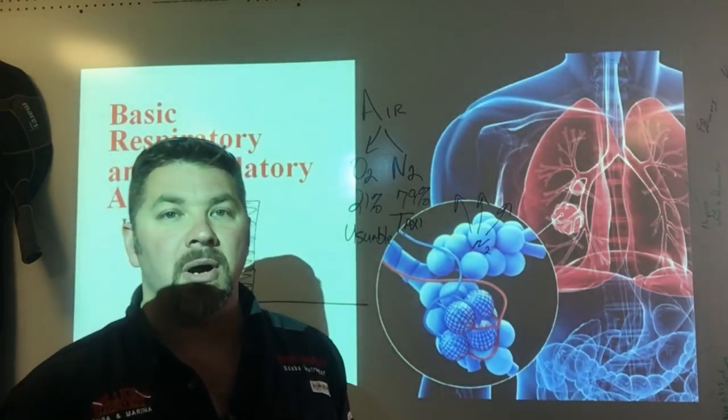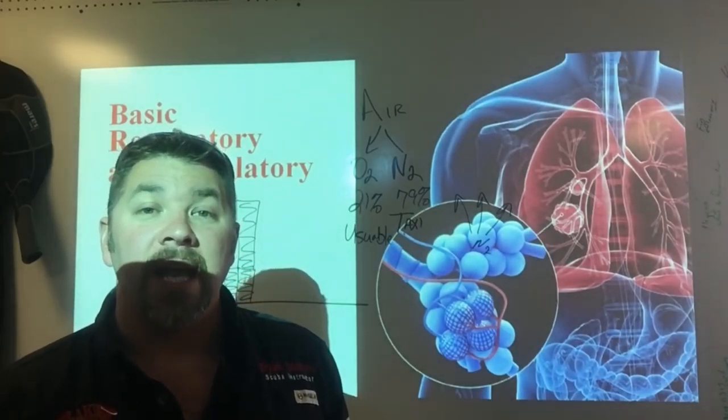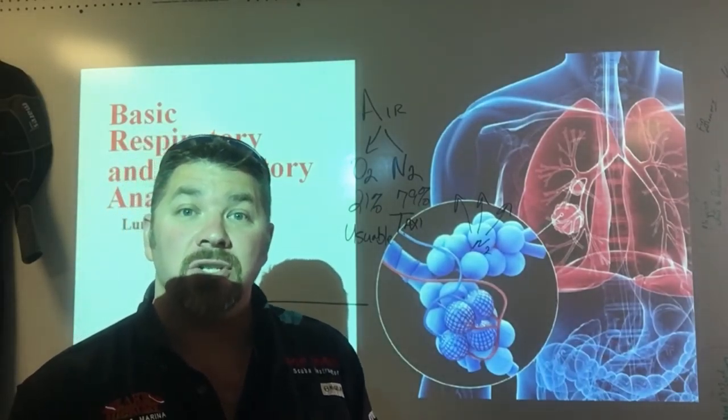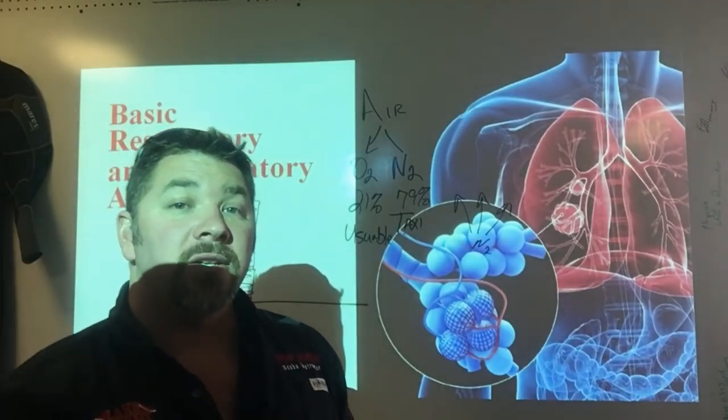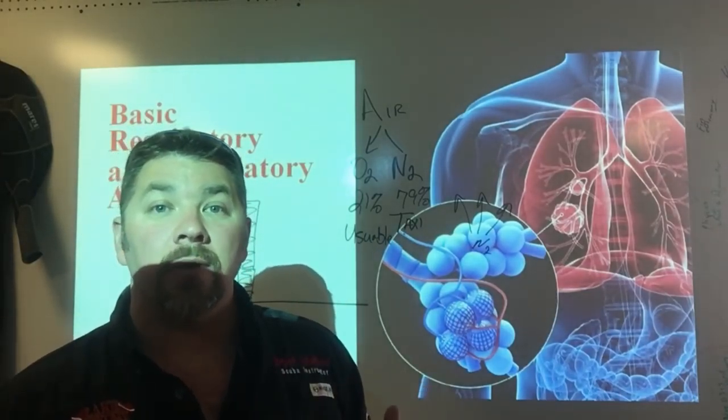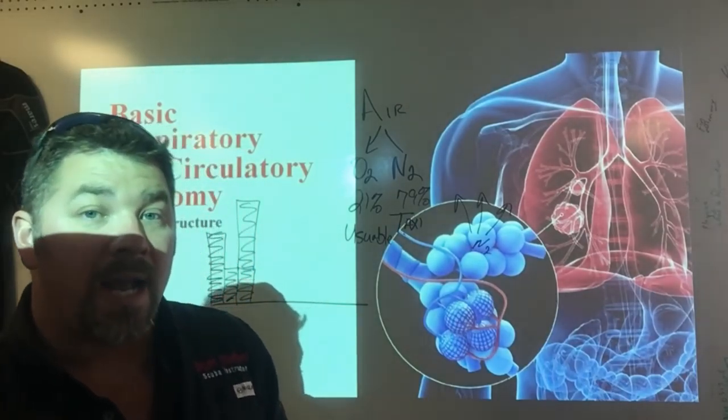Tissues can be anything. It can be your skin, your bone, your toenails, your hair follicles, your eyeballs. It can be any tissue throughout your body. We do have what's called fast tissues and slow tissues. Fast tissues are going to absorb and disperse those bubbles quicker than slow tissues. But it all depends on how deep you are and how long you stay.